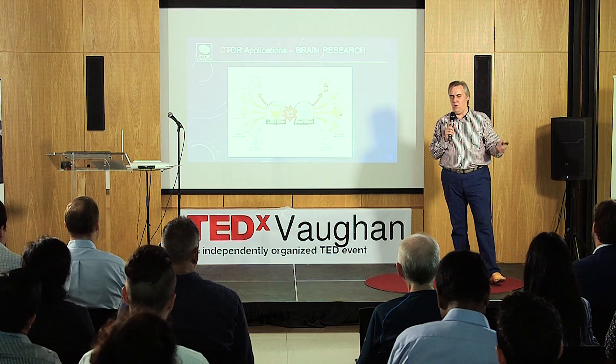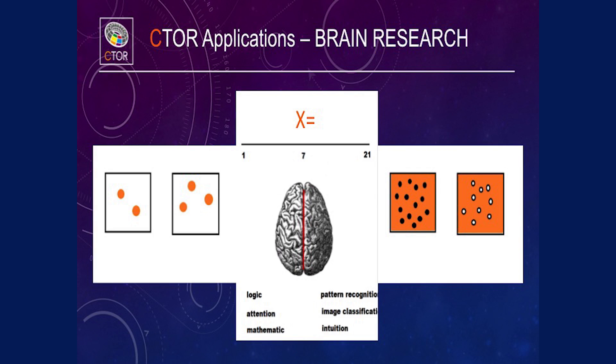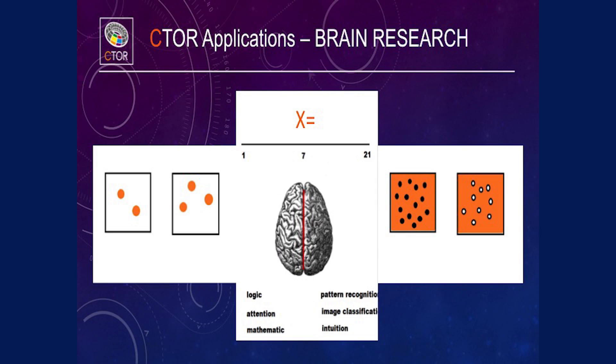So in terms of brain research, we all know that there's a left brain and a right brain. Left brain stands for logic and counting things. Right brain stands for imaginative and pattern recognition. On the left side, you see two squares and you can clearly tell me which square has more dots because you counted — it's two and it's three. That was your left brain. Now on the right side, you can also tell me that there are more dots on one side than the other, but you didn't count them — because this is your right brain.